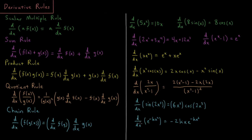Another derivative that comes up fairly often is e to the negative kx squared. The derivative of e to the x is just e to the x, so we keep everything inside the same: e to the negative kx squared. Taking the derivative of the inside, negative kx squared, gives us negative 2kx. So we pull a factor of negative 2kx to the outside, and the derivative of e to the negative kx squared is negative 2kx times e to the negative kx squared.